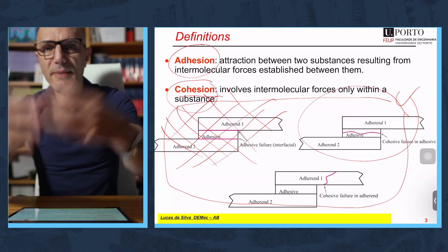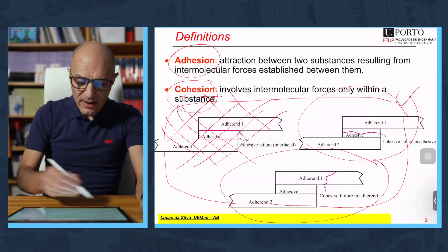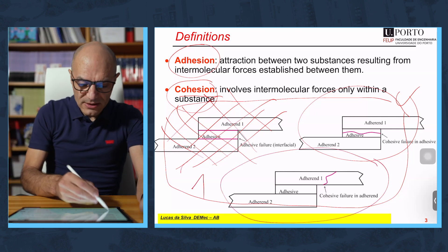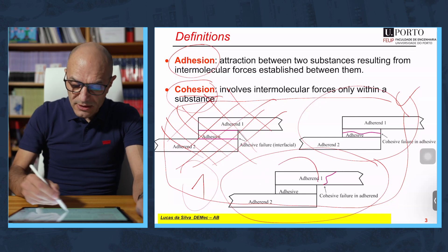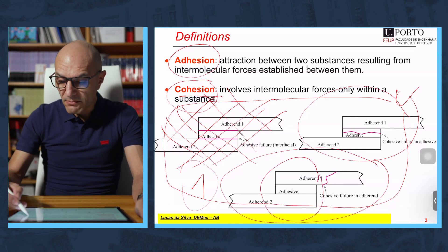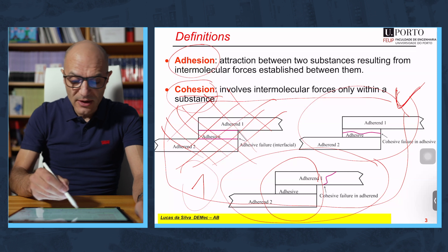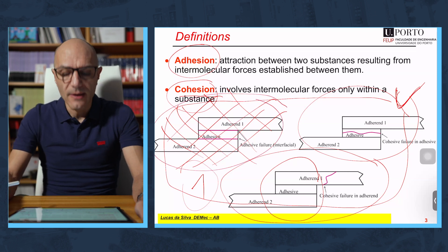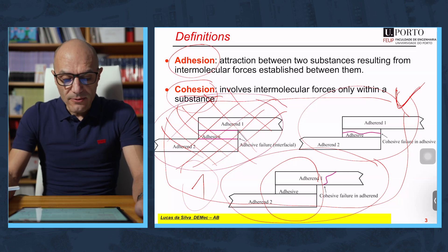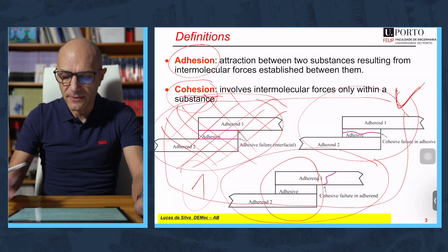So we have the three main modes of failure. The ideal situation is when the joint is not the weakest link, and this occurs very often. When adhesive failure occurs, we are in trouble — it means we didn't treat the surface properly.